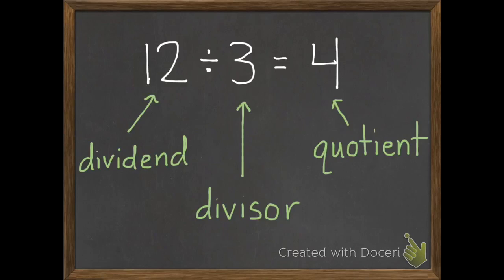So if we have 12 things total, we divide them between 3 people or 3 groups. Each of those groups would get 4, which is the answer or quotient.